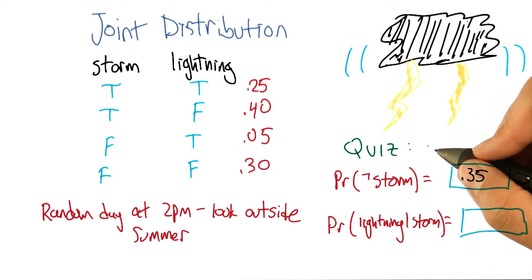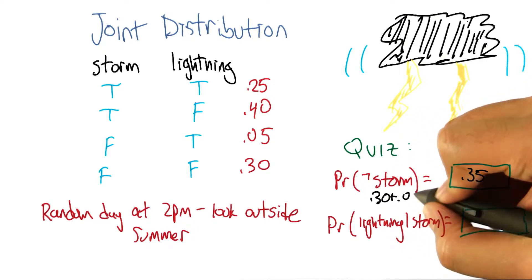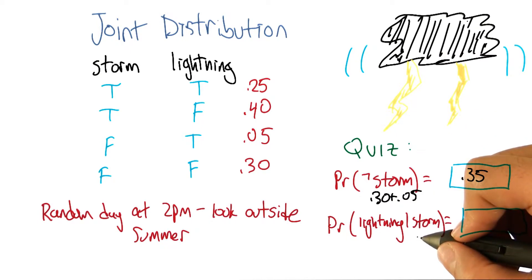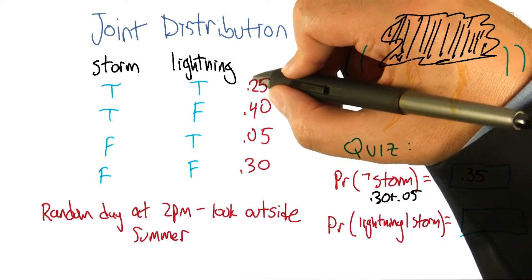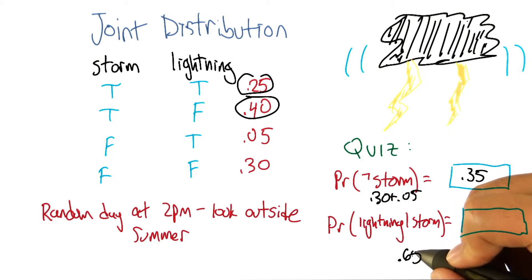All right, what about the second question? Okay, so that's probability that there is lightning in a world where there is a storm. So I'm going to do a very similar trick. I'm going to look at the cases where storm happens to be true. And conveniently, they're the first two rows. And I have two cases. So we know the probability of there being a storm is 0.65, which is good, because 0.65 and 0.35 add up to one.